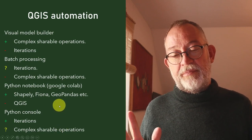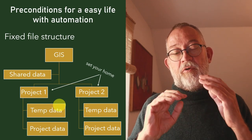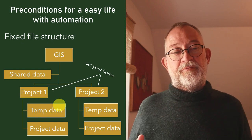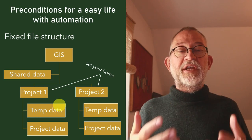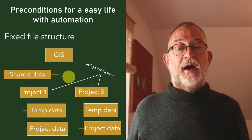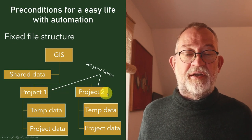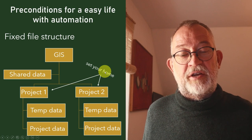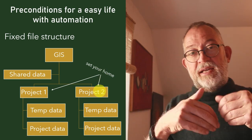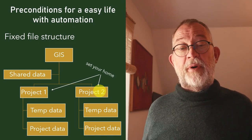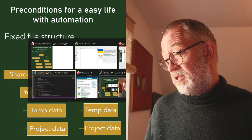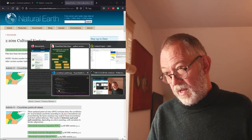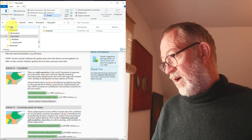Before we start, there are some preconditions. Automation is only fun if you can use it again and again — there's not much point in automating a one-off task. To be able to reuse automations, have a fixed file structure. I have a GIS folder with shared data, and underneath that my project folders. I've downloaded some data from Natural Earth, covered in another video, and created this file structure on my hard drive.